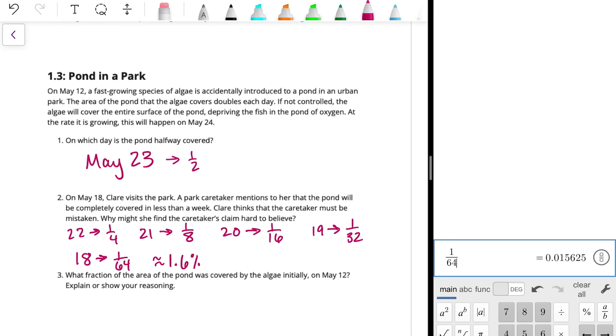And that's where exponential functions can really make a big impact. All right, so what fraction of the area of the pond was covered by the algae initially on May 12th? Well, May 12th is 12 days before May 24th. So it took 12 days for the pond to be fully covered. And so remember that on the day before, it was one half of the pond was covered. And so if you notice the pattern from part two, we are raising that one half to the power of however many days. And so this would be one over two to the twelfth.